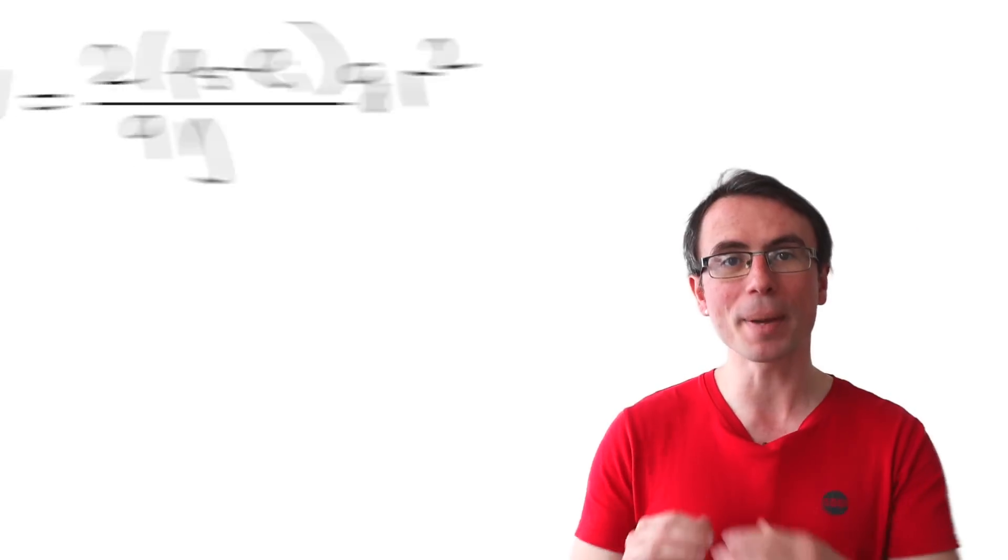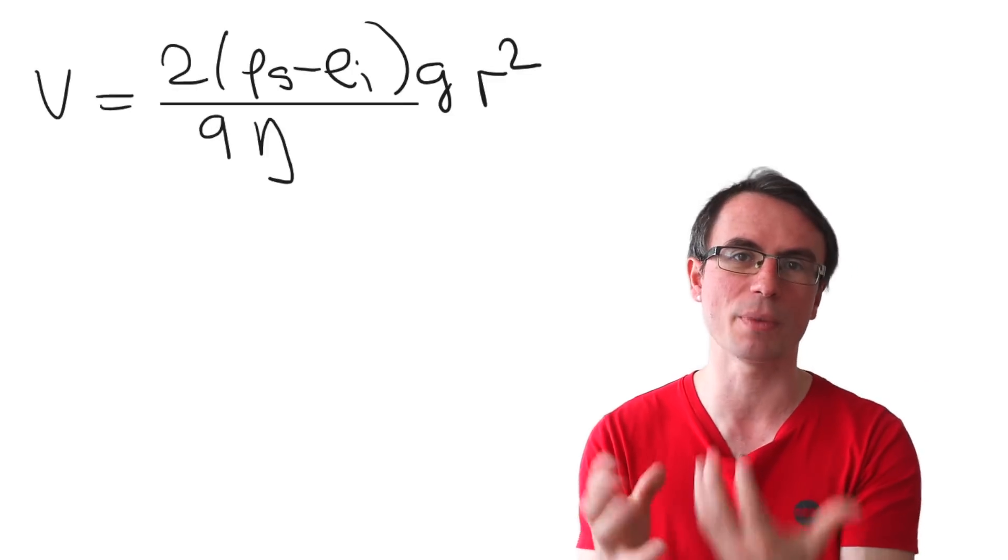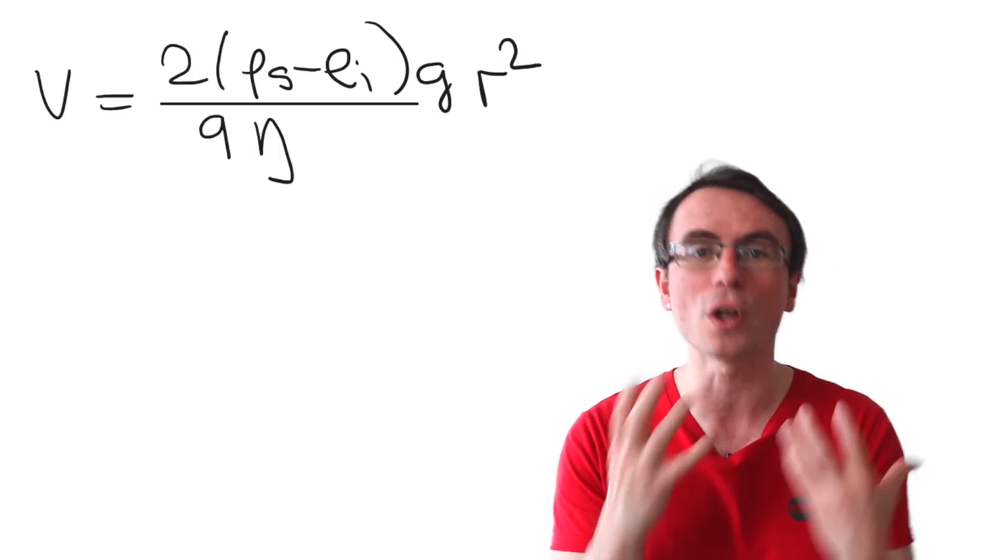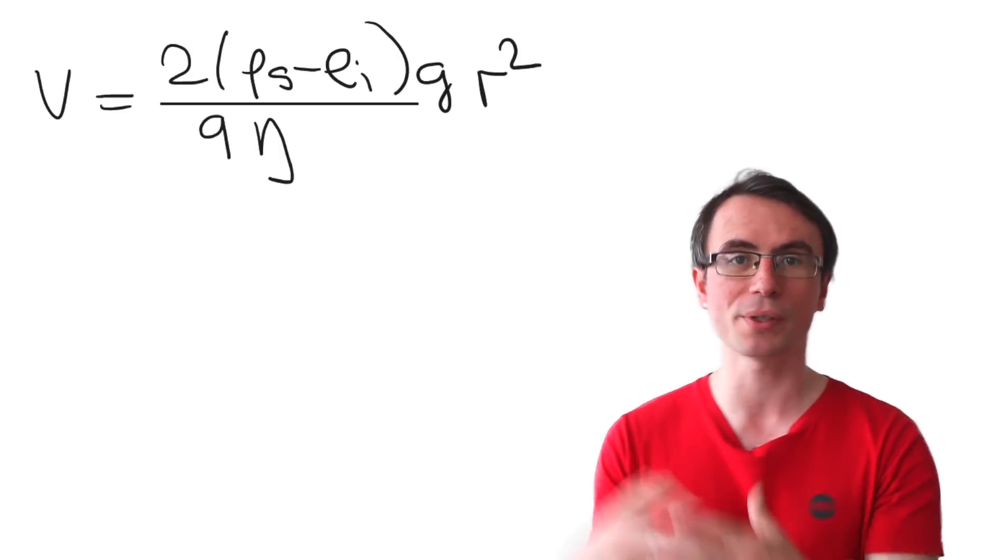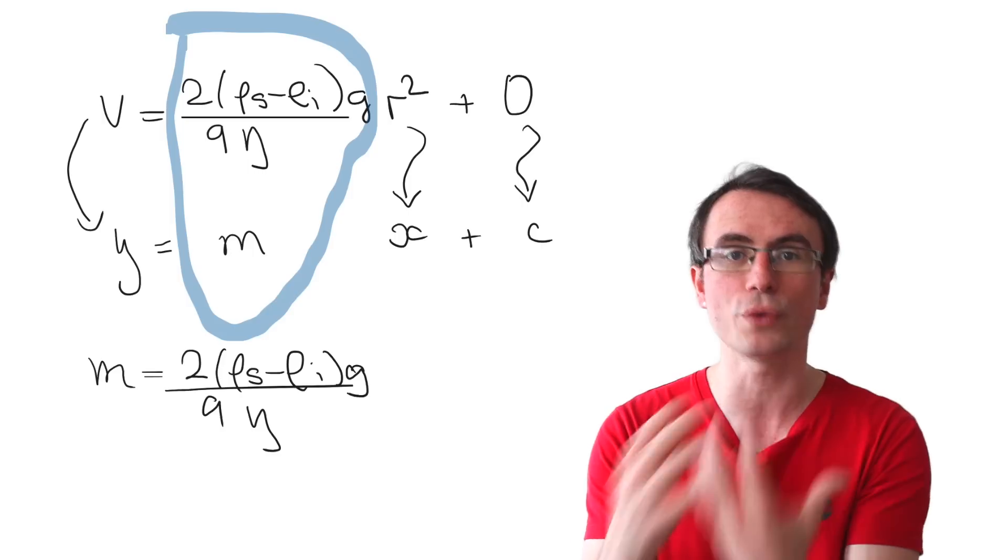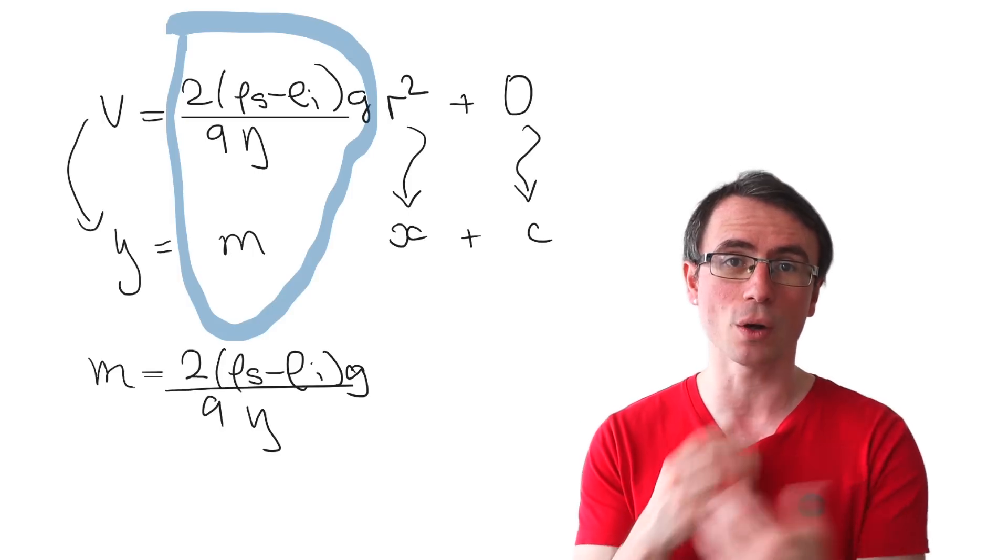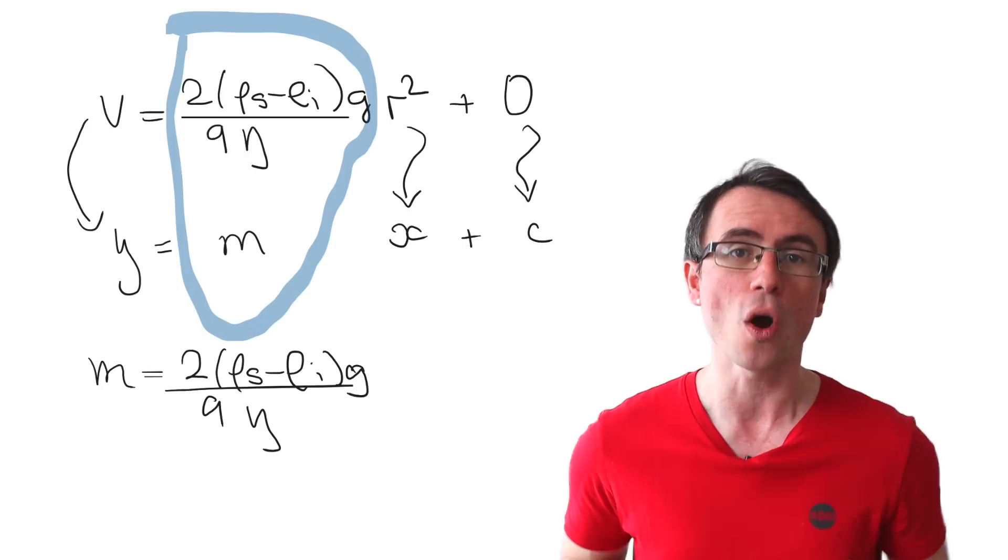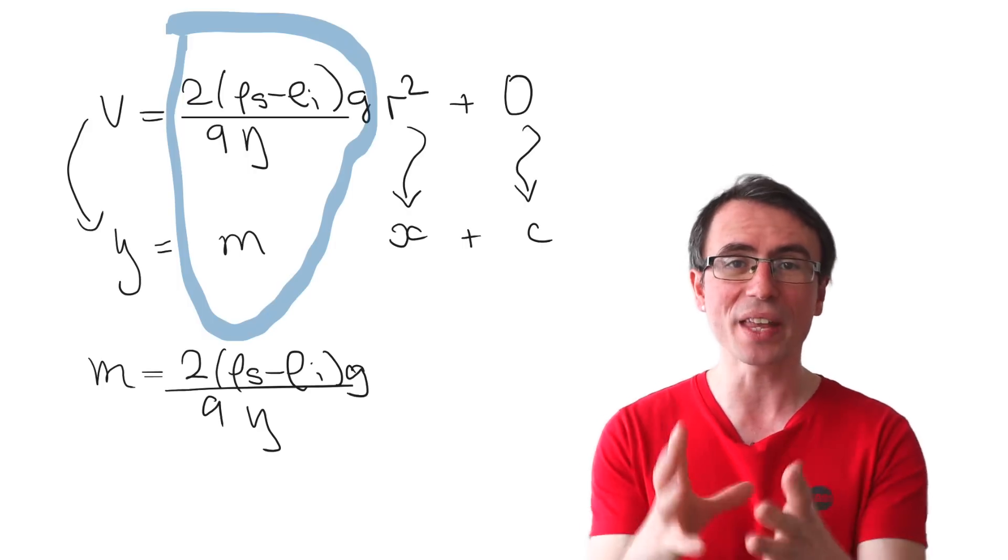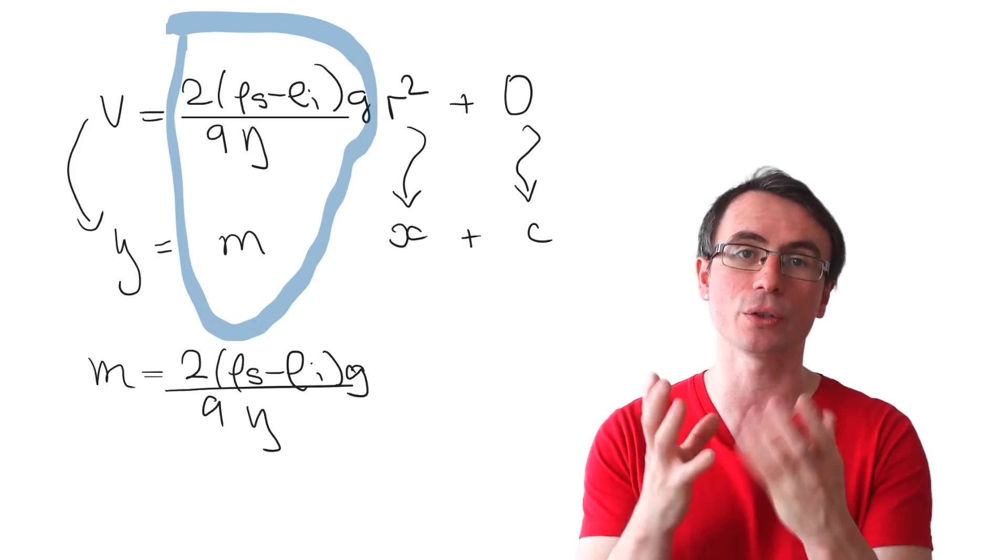In paper 3, you're very likely to get some y equals mx plus c linear analysis. Be prepared to come across an equation that you've never seen before or you've rarely seen before. For instance, this here is the terminal velocity equation in terms of its viscosity. If we had to do y equals mx plus c analysis to rearrange to figure out the viscosity, we could plot a graph with v on the y-axis against r squared on the x-axis, and then we could rearrange our equation for the gradient to work out the viscosity.